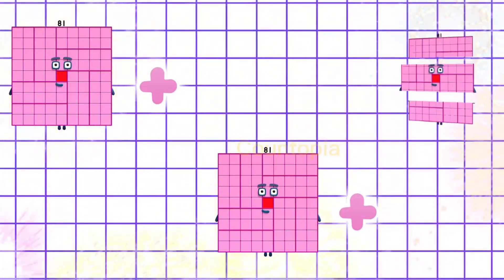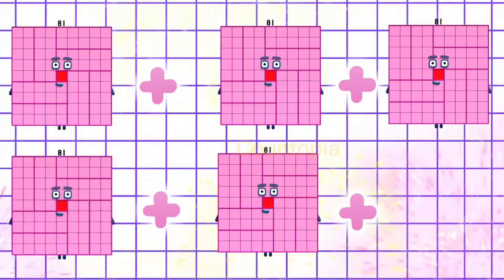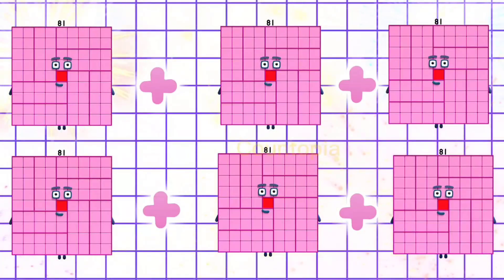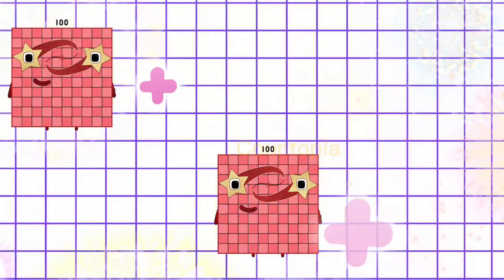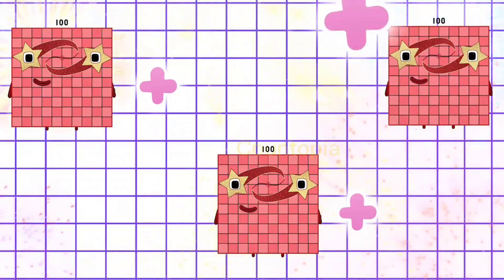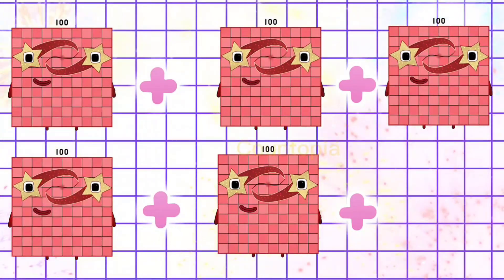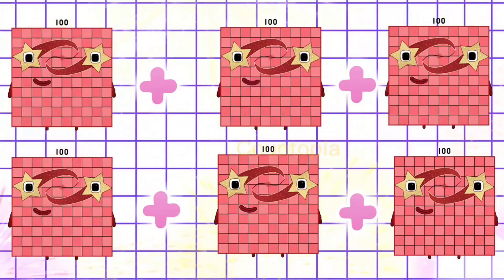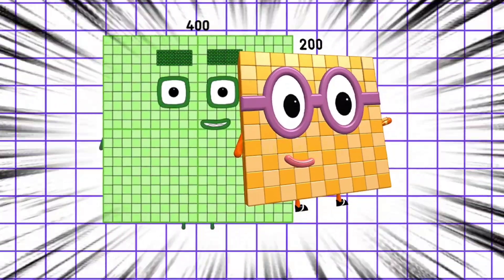81 plus 81 plus 81 plus 81 plus 81 plus 81 is equals to 486. 100 plus 100 plus 100 plus 100 plus 100 plus 100 is equals to 600.